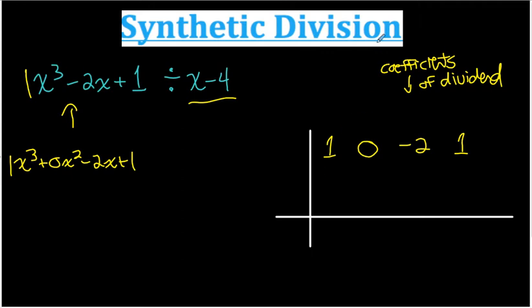So I write all the coefficients of each term in my dividend here, and then I write the 0 of the divisor here. So by 0 of divisor, I mean for this divisor, what value of x would make this be equal to 0? Well, if x was 4, I would have 4 minus 4, which is 0. So 4 is the 0 of the divisor.